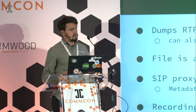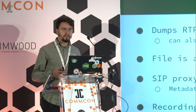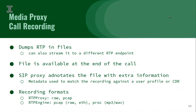The SIP proxy is the one that knows information about the user profiles, so he's the one that can annotate and add extra metadata inside the call recording. The formats the files are dumped into are raw RTP packets, or a pcap file for RTP proxy that you can simply open with Wireshark and play immediately. If you get raw, you'll have to mux the two streams and then decode and convert them to MP3 or WAV files.